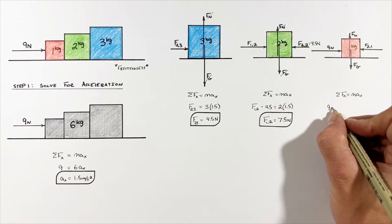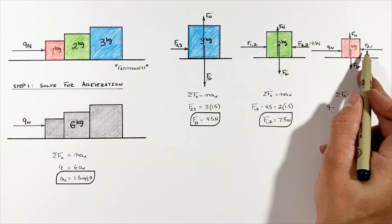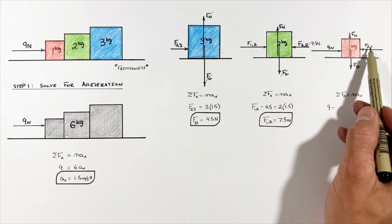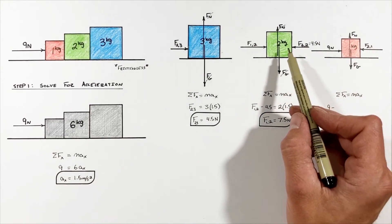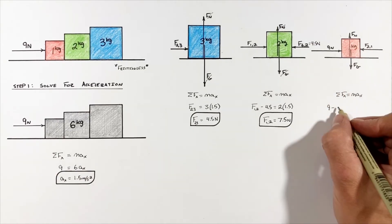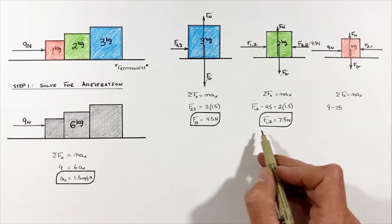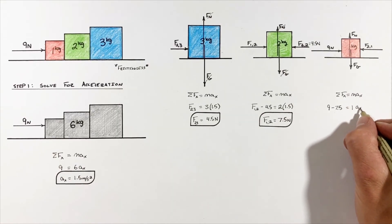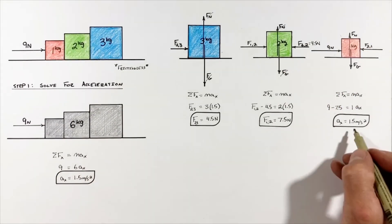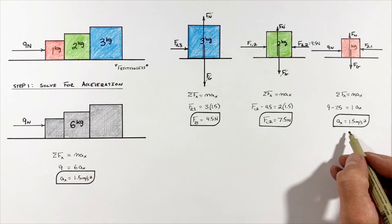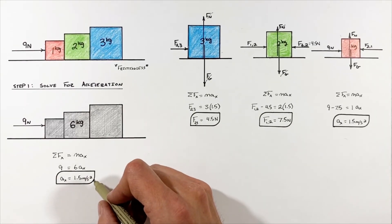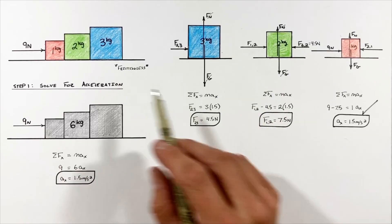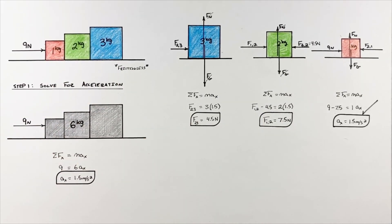We have nine newtons to the right, and acting to the left is the force by block two on block one — the action-reaction pair of the force between blocks one and two — so that force is 7.5 newtons to the left. Applying Newton's second law to the one-kilogram block, we find the acceleration is 1.5 meters per second squared, confirming our earlier result and verifying that both normal forces are correct. That's all for this three-block system problem.